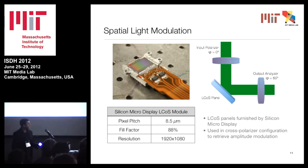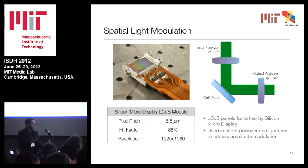For the spatial light modulator, we're using a device from Silicon Micro Display, a company based in Kendall Square, which fabricates LCOS modules for head-mounted display applications. They have an 8.5 micron pixel pitch, 88% fill factor, and 1080p resolution. We're using this in an amplitude modulation configuration with two cross-polarizers to retrieve the amplitude modulation.